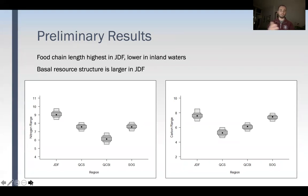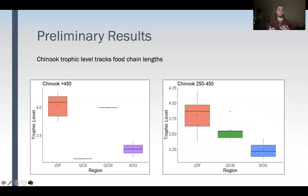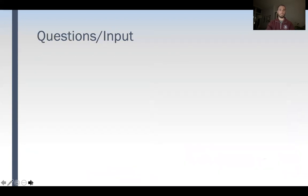What's interesting is how Chinook trophic level seems to track these food web metrics — Chinook feeding in areas with longer food webs seem to feed at higher trophic levels, whereas Chinook in areas with shorter food webs, such as the Strait of Georgia, feed at lower trophic levels. The next step is to examine how this impacts Chinook foraging, life history, and energy density. That's all I have time for — I'll take any questions or input, as this is an ongoing project.